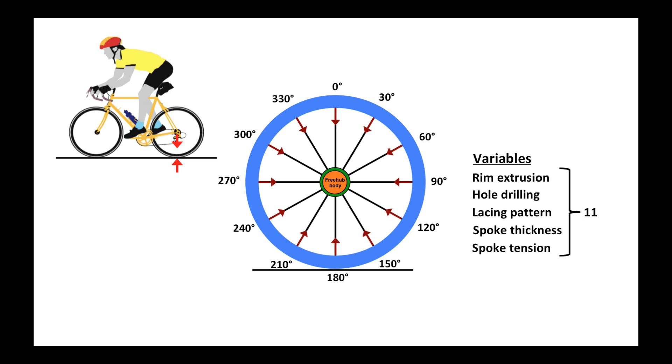All together I studied very closely the tension changes in 11 separate wheels where the variables were rim extrusion, hole drilling, lacing pattern, spoke thickness, and spoke tension, and I will show you the results of a few of those.